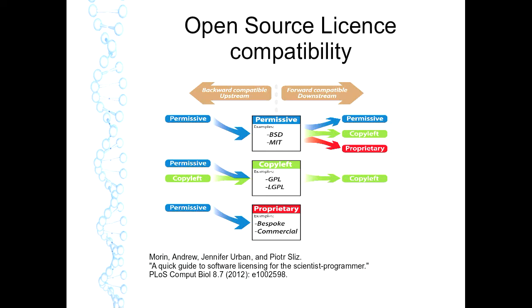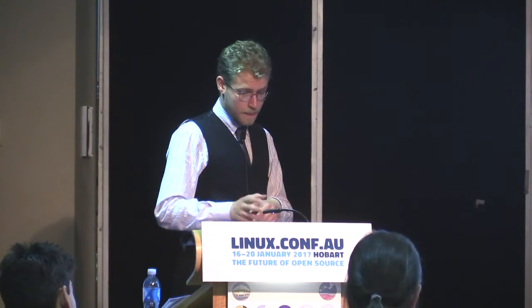This is illustrated in Andrew Morin and Jennifer Urban's work on a quick licensing guide for scientific programs, which addresses the concept of backwards and forwards compatibility of upstream and downstream development. Permissively licensed works can be included in proprietary code, in copyleft code, and in permissive code. In contrast, you can include permissive code in a copyleft work, but you can't include proprietary code, and you can only include copyleft code in another copyleft work — that re-licensing requirement requires you to keep on re-licensing.